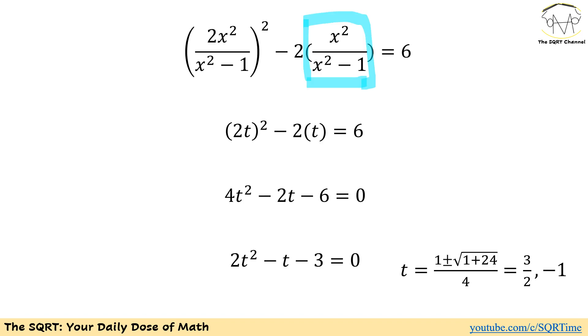Now we are going to use a variable like t for x squared over x squared minus 1. So the first component is going to be 2 times t to the power of 2 minus 2 times t is equal to 6 and if we simplify it we are going to have 4 times t squared minus 2t minus 6 is going to be 0. If we divide both sides by 2 we will have 2 times t squared minus t minus 3 is equal to 0 and if we solve it then t is going to be 3 over 2 or negative 1.